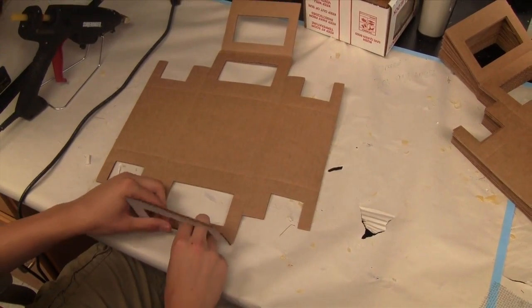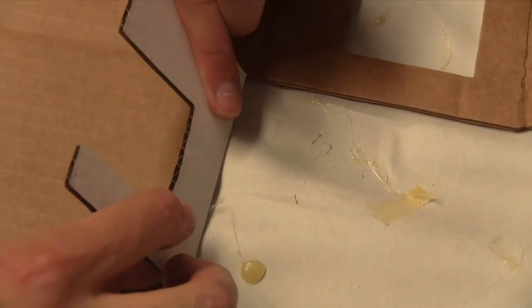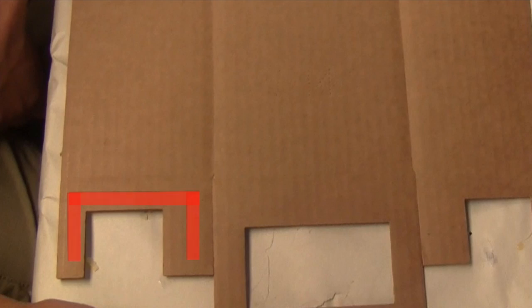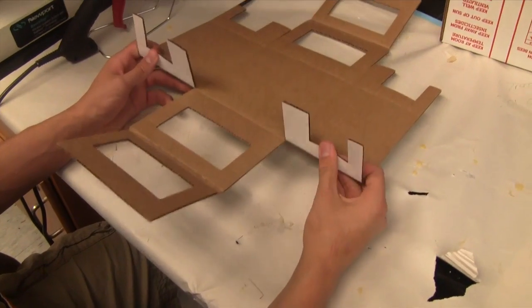Fold the box along all creases, both perforated and non-perforated. Locate the U-shaped flaps of cardboard. Fold them towards the center until they are standing upright.